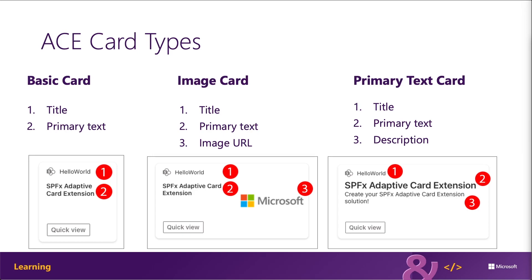The primary text card template also supports three properties. The first property is the title of the ACE, typically set when creating the project with the SharePoint Framework Yeoman Generator. The second is the primary text of the ACE, providing context to the user about the card. The third property is the description of the ACE, which is used to display more textual information to the user.